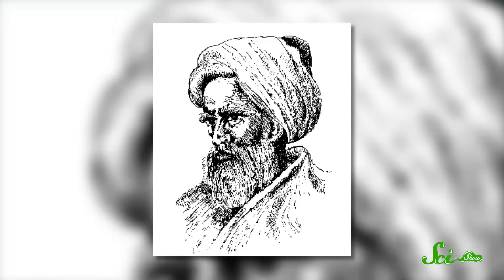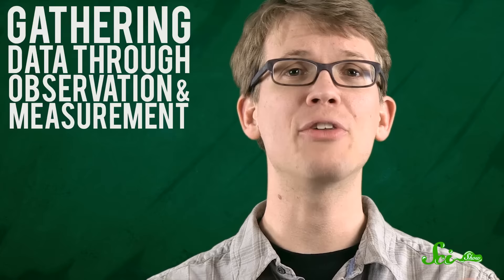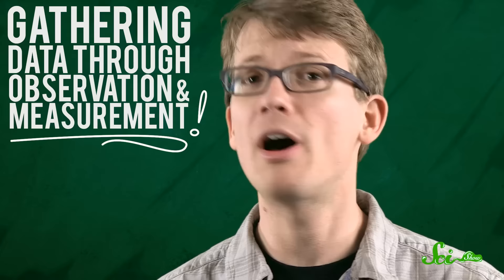In fact, if you want to call somebody the father of the scientific method, the best candidate would probably be 10th century Arab scientist Ibn al-Haytham. Ibn al-Haytham did amazing work on light and optics, a topic on which he wrote seven books. He used math to prove that we see light that enters our eyes and not because light comes out of our eyes, which was the prevailing theory of the day. He also developed a method for his inquiries that was based on, first, gathering data through observation and measurement, followed by formulating and testing hypotheses to explain what he observed. Basically, he invented a stripped-down version of what we roll with today.